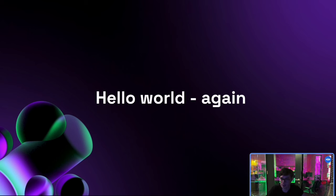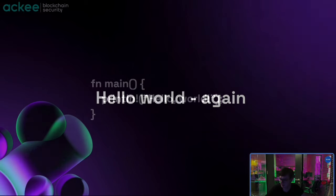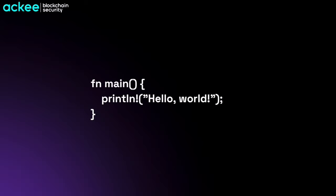Let's jump right in and talk about the basics — and that's obviously a Hello World program. A Hello World program in Rust is very similar to Hello World in pretty much any other language. We are essentially defining our main function using the fn keyword, and in that function we are printing out the line with the Hello World string.